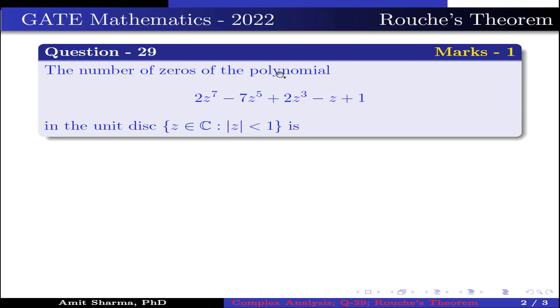Question is: the number of zeros of the polynomial 2z^7 - 7z^5 + 2z^3 - z + 1 in the unit disc {z ∈ ℂ : |z| < 1} is.